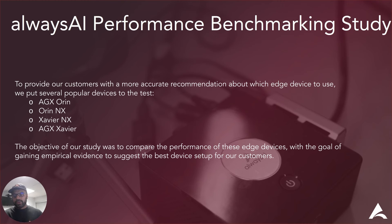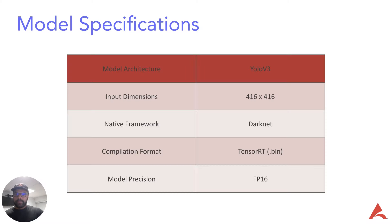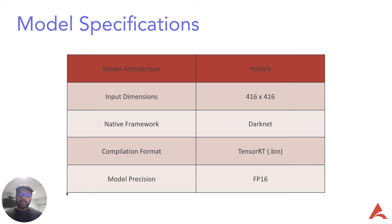The model used in the study is YOLOv3. The input dimensions of the model are 416 by 416. The native Darknet framework was used and it was compiled to TensorRT format. The precision of the model is FP16.